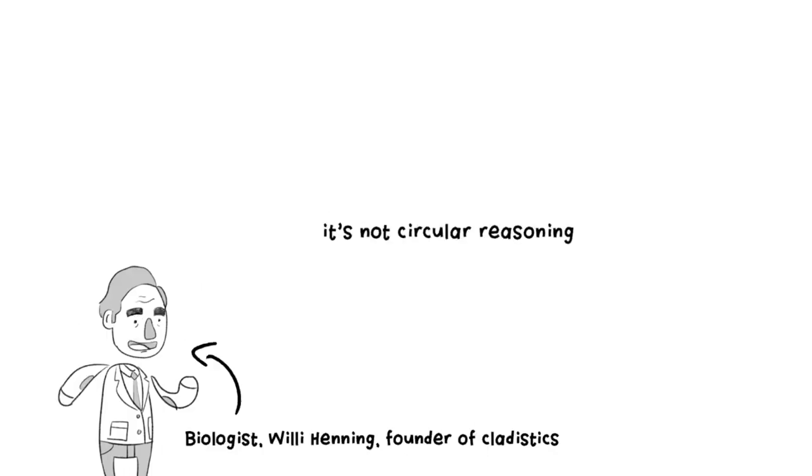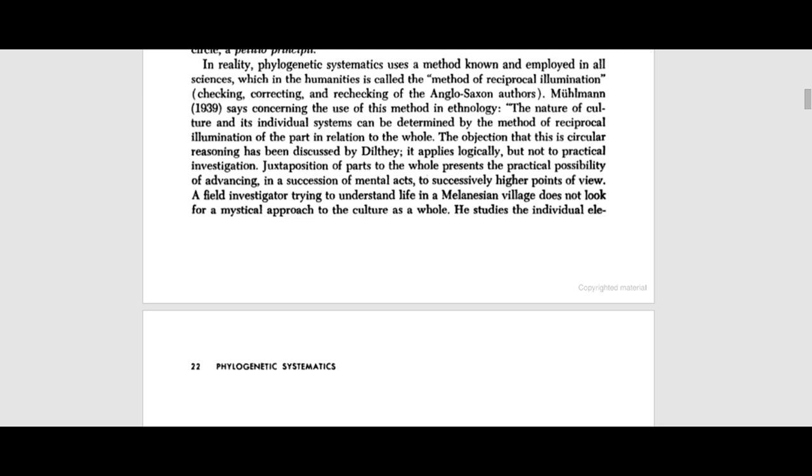LSS introduces the concept of reciprocal illumination, claiming biologists simply redefined circular reasoning with a fancy term. This is extremely misleading. Hennig, in 1966, argued that the relationship between homology and ancestry isn't any more logically circular than the rest of science, where hypotheses are constantly tested against the larger theory every time new data is available. Hypotheses are generated from data and then compared to further data. As Hennig explains in Phylogenetic Systematics: 'Phylogenetic systematics uses a method known and employed in all sciences, which in the humanities is called the method of reciprocal illumination — checking, correcting, and rechecking.'